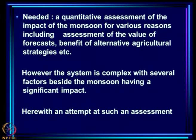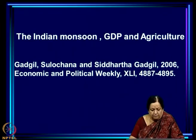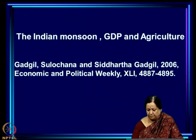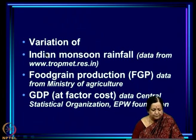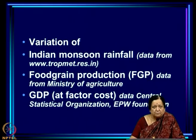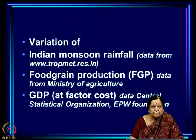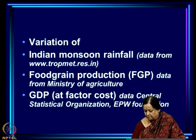However, the system is complex with several factors besides the monsoon having a significant impact. We will talk today about an attempt at such a quantitative assessment from a paper we published called 'Indian Monsoon, GDP and Agriculture' in Economic and Political Weekly in 2006. The basic data used are: Indian monsoon rainfall from the IITM website, food grain production data from the Ministry of Agriculture, and GDP at factor cost data from the Central Statistical Organization and EPW Foundation.